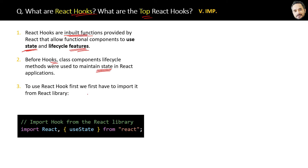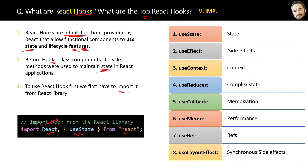Functional components are simpler. To use React hooks, we have to import them from the React libraries. The list of main hooks with their one-word use are: useState, useEffect, useContext, useReducer, useCallback, useMemo, useRef, and useLayoutEffect.